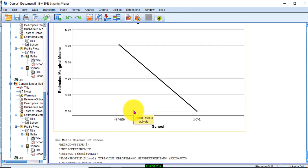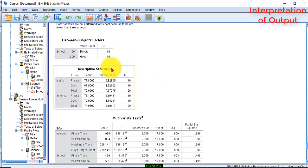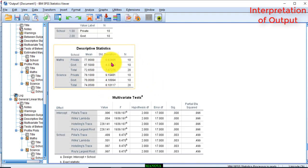Now, these are the results of one-way multivariate analysis of variance. The first table gives you the descriptive statistics which tells you that the mean scores in mathematics from the private school children is 77.8, from government school 67.5, and in science it is 78, and from government school it is 70.